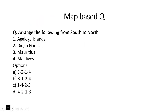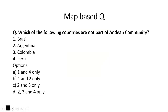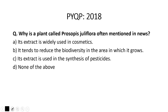Arrange the following from south to north — Mauritius, Agalega Islands, Diego Garcia, Maldives: the answer is three, one, two, four — so option B is correct. For the Andean Community question: it is a trade agreement area in South America. Brazil and Argentina are not part of it; Colombia, Ecuador, Peru, and Bolivia are. The question asks which are not part of the Andean Community, so one and two — option B is the right answer. The previous year's 2018 prelims question about Prosopis juliflora: it tends to reduce biodiversity in the area in which it grows.